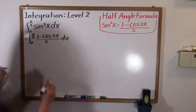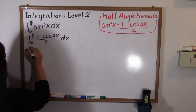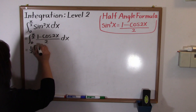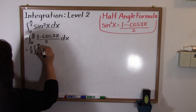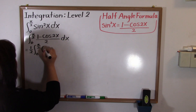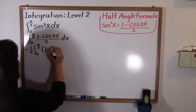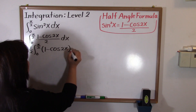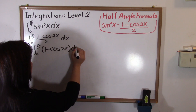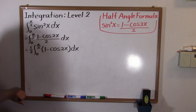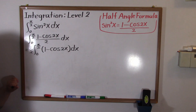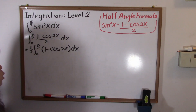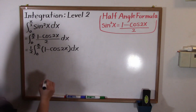Next, we want to bring the one half in front of the integral, again to make the calculation easier. So we write one half times the integral from zero to pi over two of parentheses one minus cosine two x, close parentheses, dx.